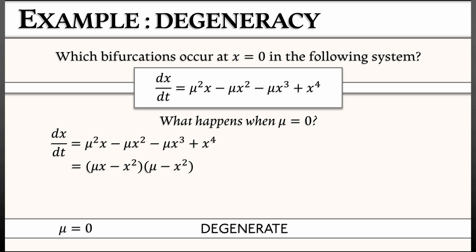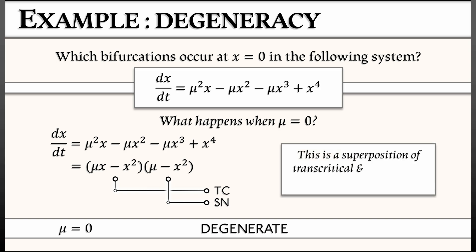Now that first term, μx - x², that's a transcritical bifurcation. That's the normal form. And it's followed by the normal form for a saddle node bifurcation. So what we have in this degenerate bifurcation is really a superposition of transcritical and saddle node bifurcations.